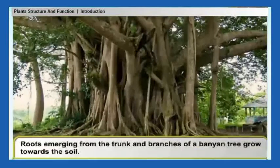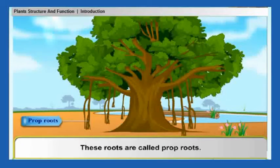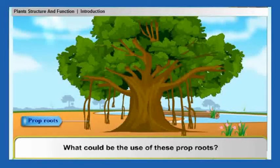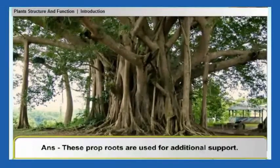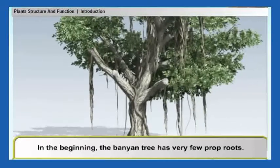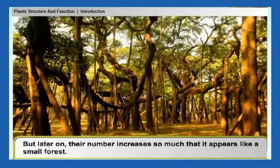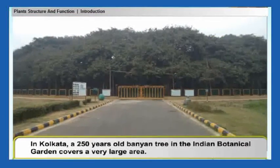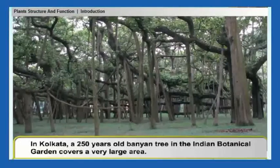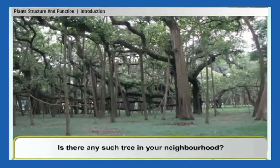Do you know that roots emerging from the trunk and branches of a banyan tree grow towards the soil? These roots are called prop roots. Prop roots are used for additional support. A prop root is an aerial root that arises from a stem or trunk and penetrates the soil. Initially, the banyan tree has very few prop roots, but later their number increases so much that it appears like a small forest. In Kolkata, a 250-year-old banyan tree in the Indian Botanical Garden covers a very large area, supported by thousands of prop roots.